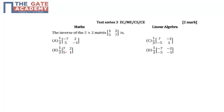Hello students, the following question is from test series 3, subject mathematics, chapter linear algebra, and the question is asked for 2 marks. The question is: the inverse of the 2 by 2 matrix, that is 1, 2, 5, 7, is one of these options.